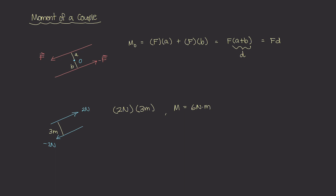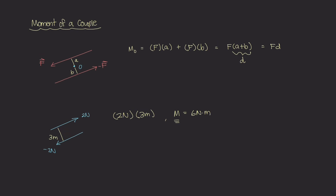That's just the magnitude. What about the direction? Looking at the center point of these two forces, the top force is going this way, so it causes a clockwise moment about that point. And the bottom vector is also going to cause a clockwise moment. So this moment, written in vector form, is 6 newton-meters in the clockwise direction.